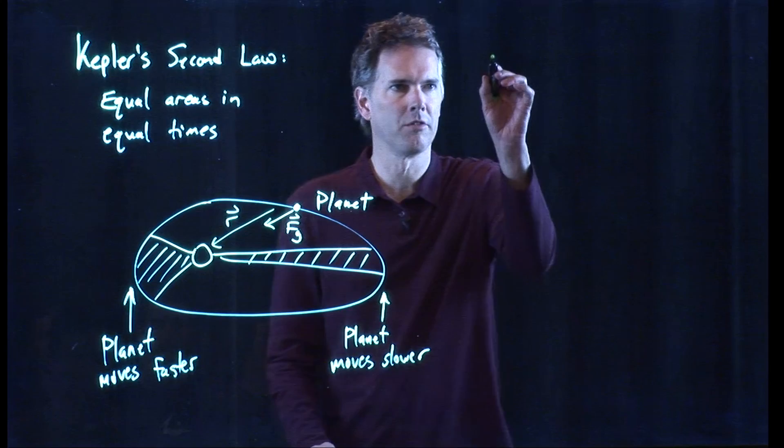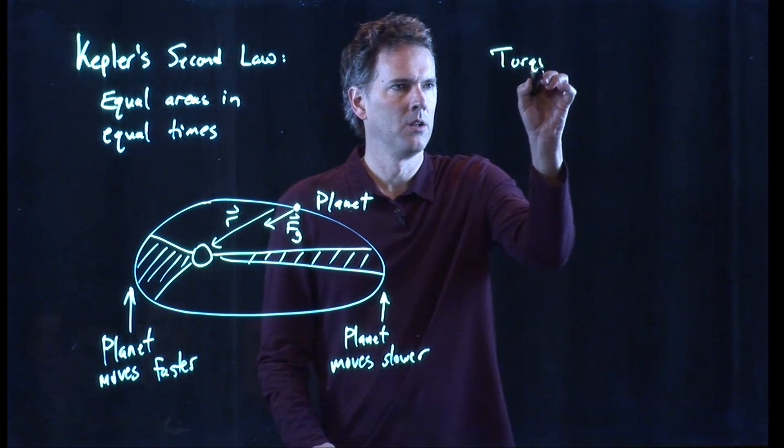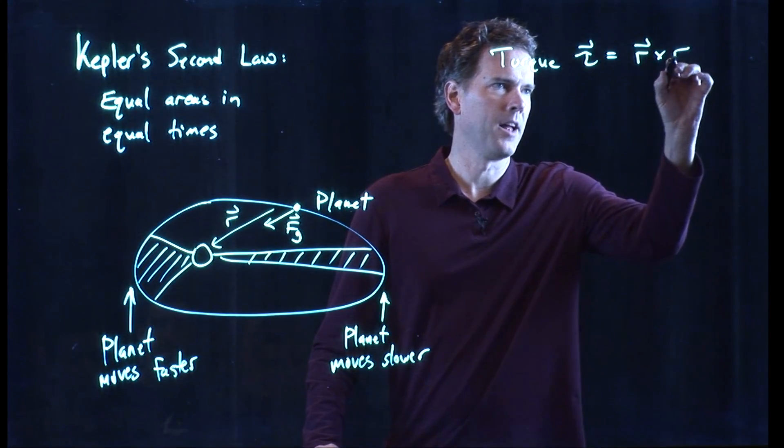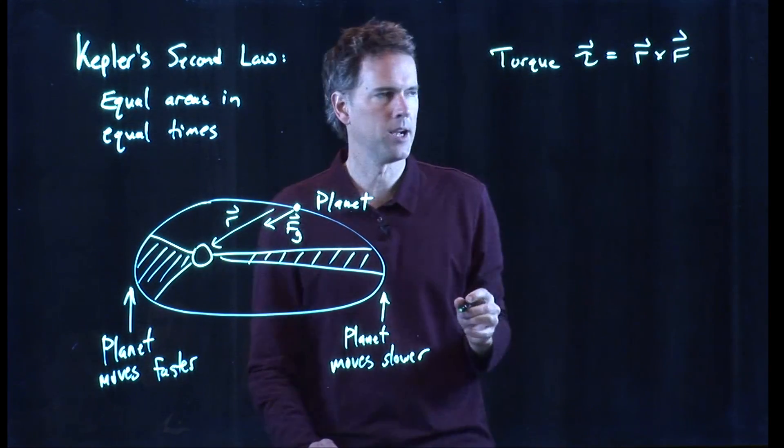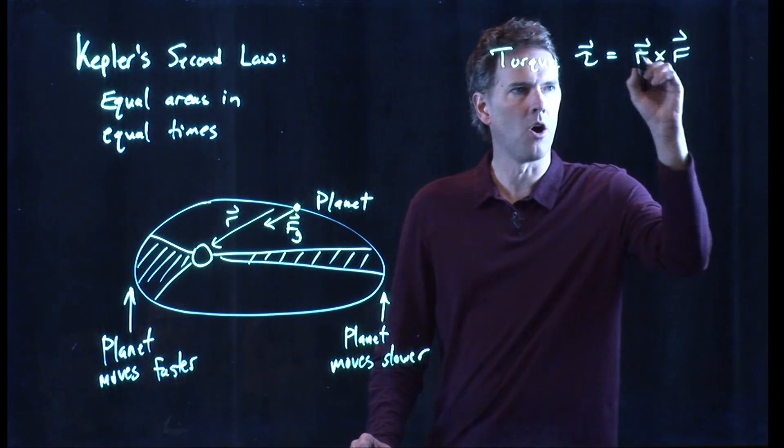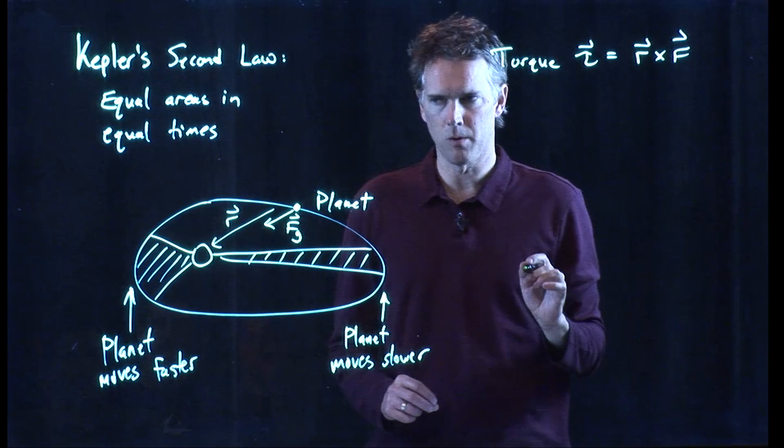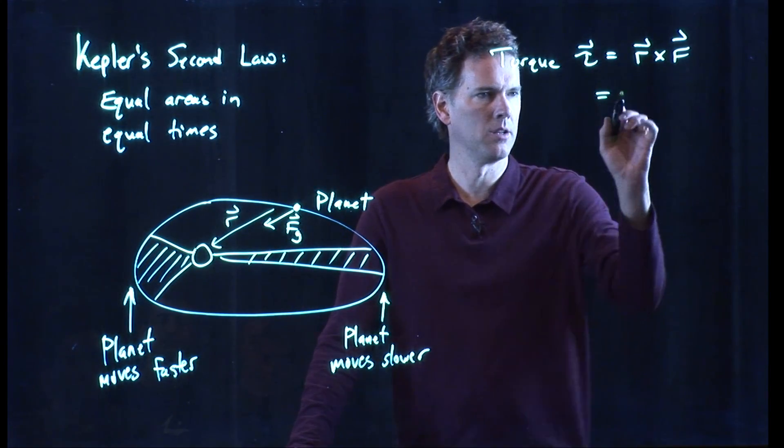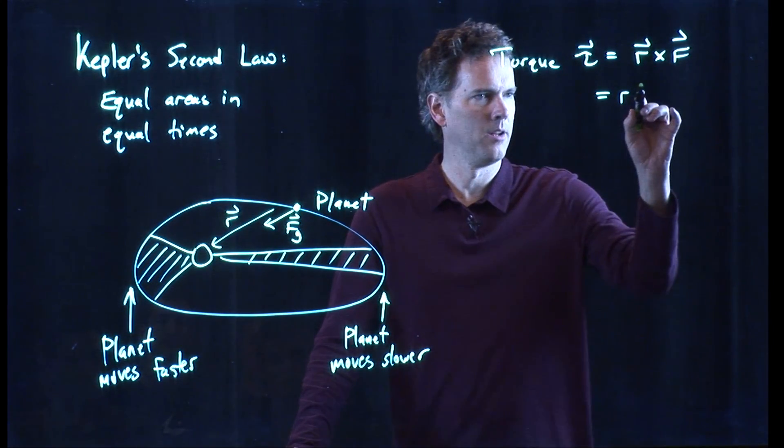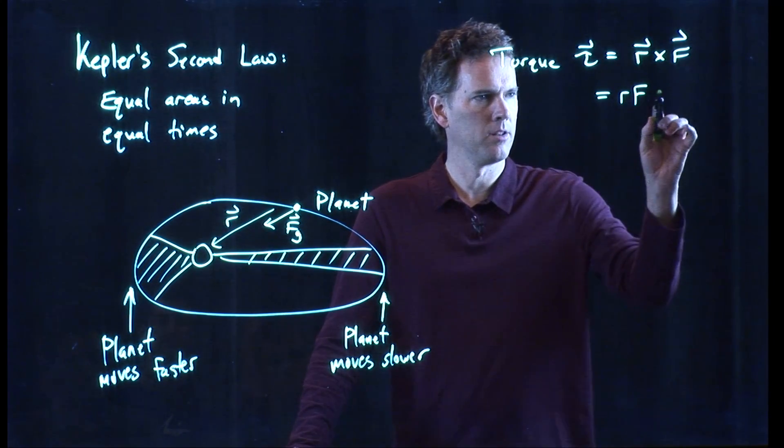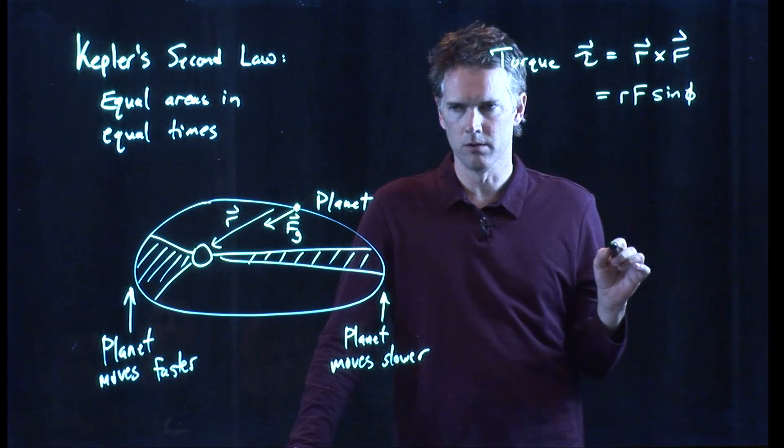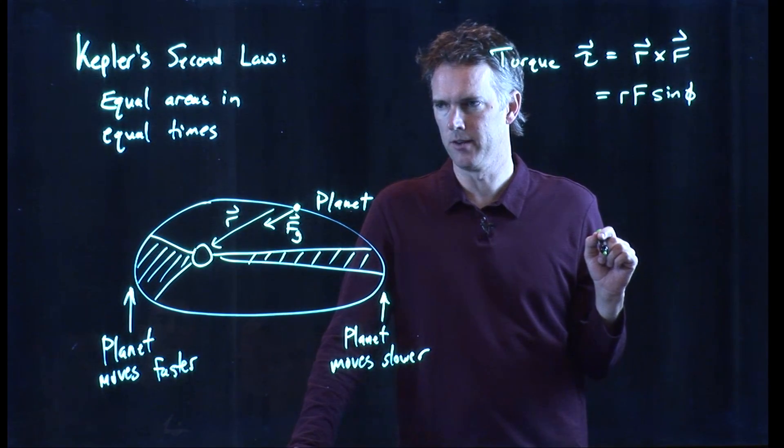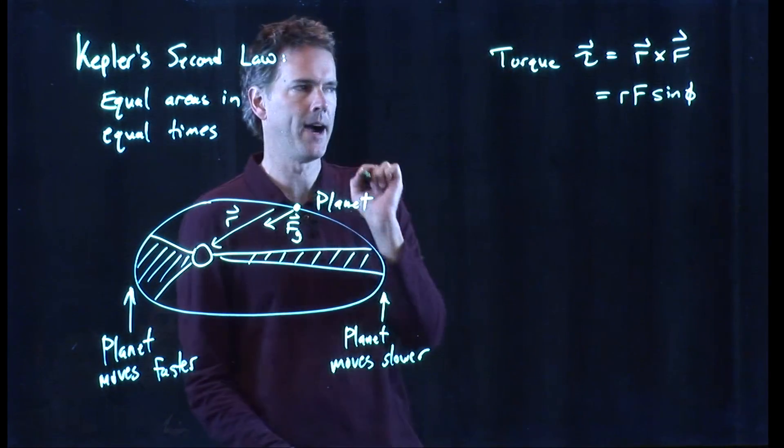So what we said about torque was the following. Torque, tau, is equal to R cross F, right? This was a cross product. R is the position. F is the force that you apply. And that cross product has a very particular definition. It's equal to the magnitude of R, the magnitude of F, the sine of the angle between them, and then there is some direction vector that we would tack on to the end of it. And it would be either into the page or out of the page.